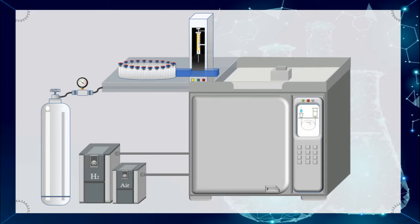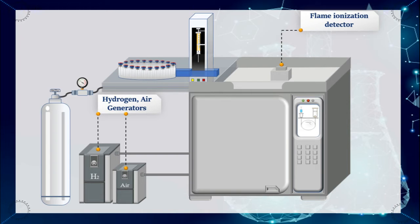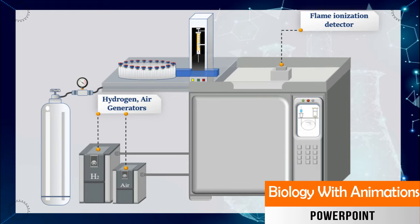There is also a detector that measures analytes in a gas stream attached to the GC system. The flame ionization detector is almost universally employed, where the flame commonly is generated with hydrogen and air.